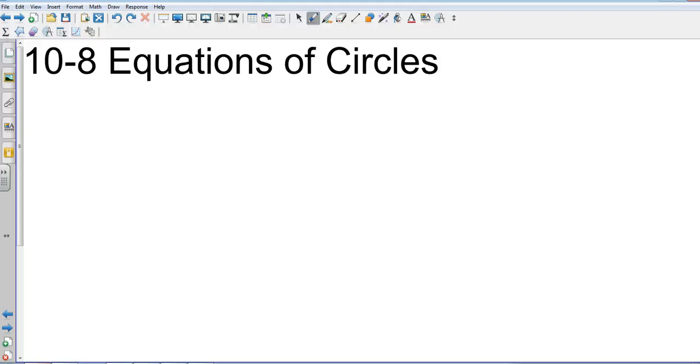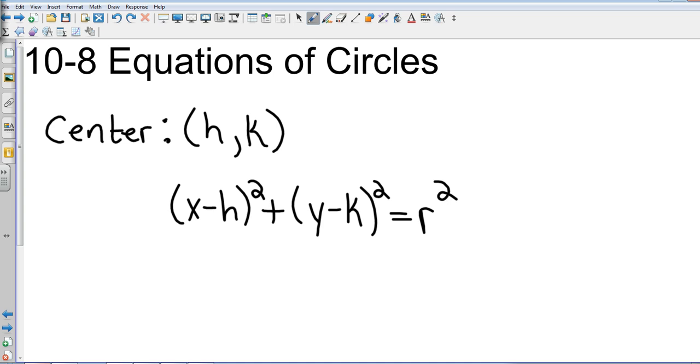Alright, geometry 10-8 equations of circles. This is going to complete chapter 10, this will be the last section. So let's get to it. I'm going to put up here the equation of the circle. We're starting with the center of h, k. They're just going to let the center be represented by two different values h and k, and that gives our formula as x minus h squared plus y minus k squared equals r squared, which r is for the radius.